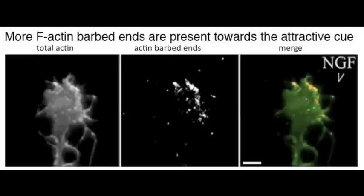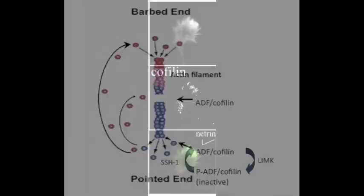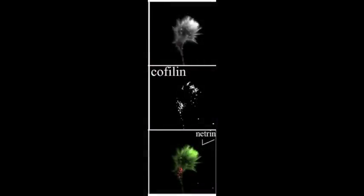This localized polymerization is mediated by ADF cofilin, which severs actin filaments to create new barbed ends for accelerated actin polymerization. Activated ADF cofilin accumulates in growth cone regions closer to an attractive cue.